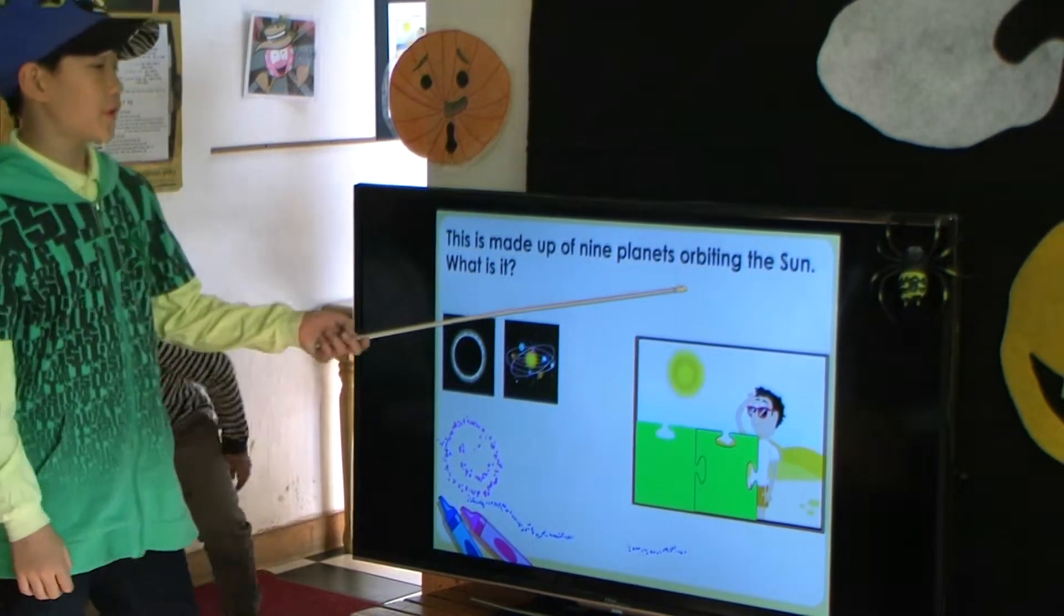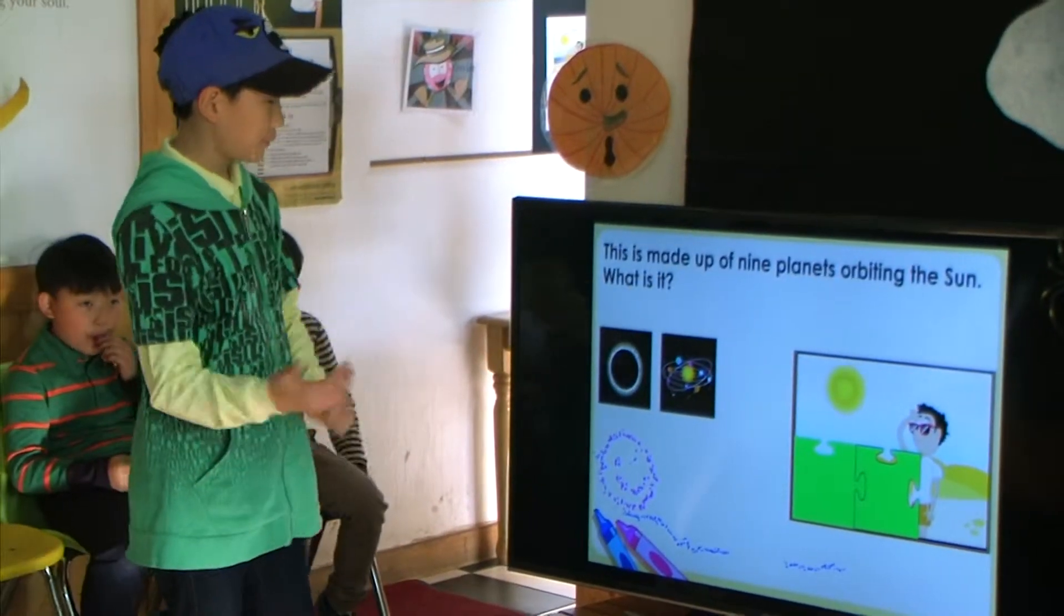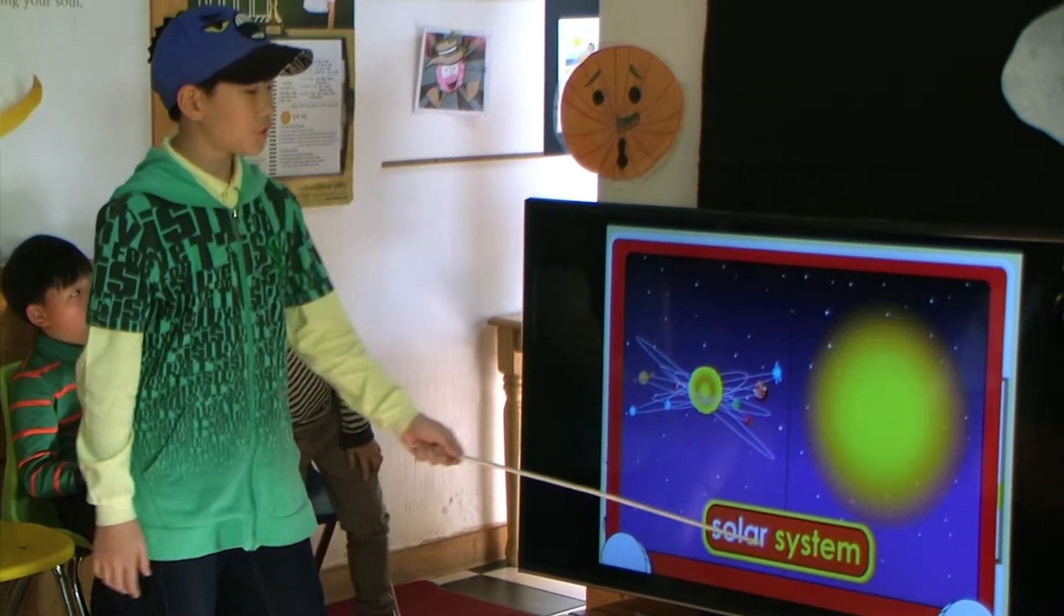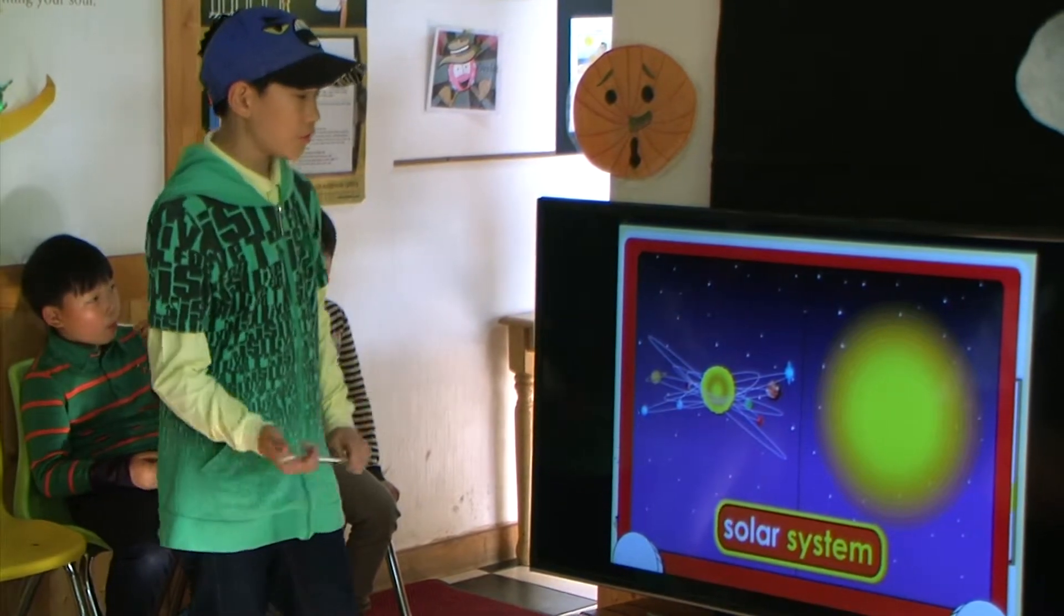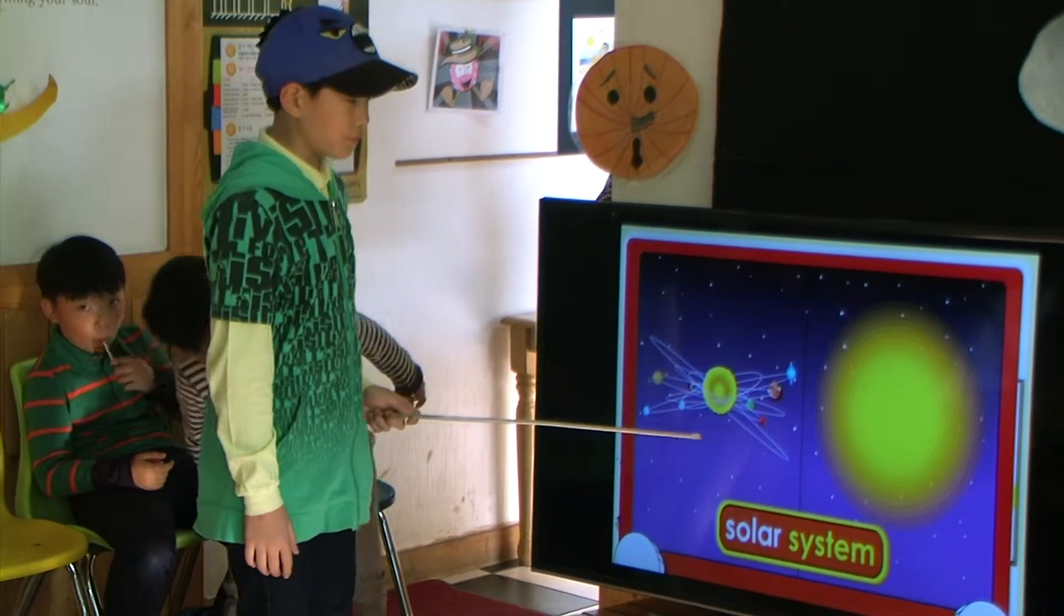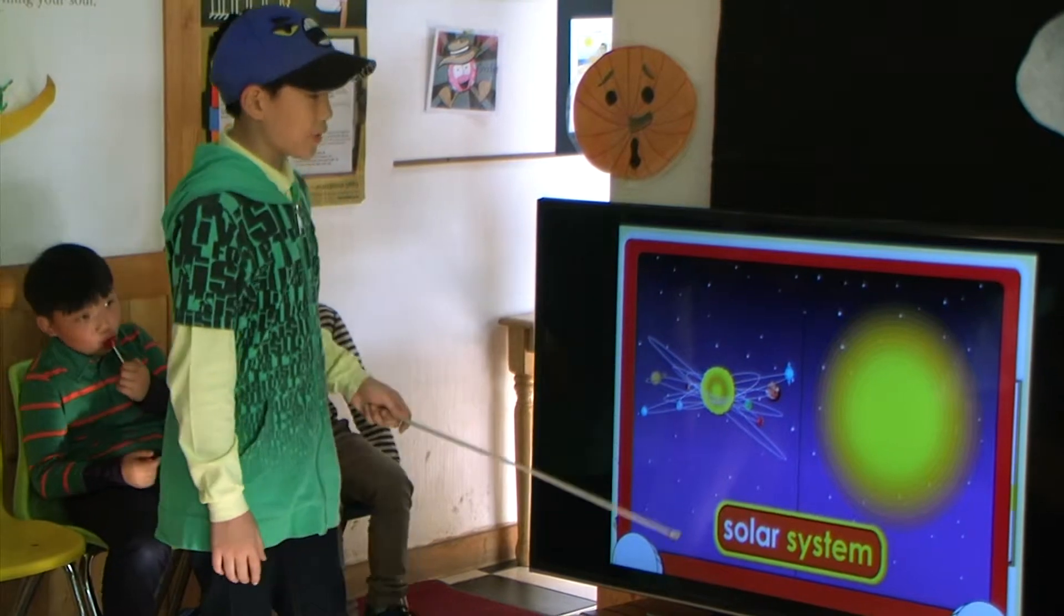What is it? Solar system. Our solar system is made of a medium-sized star, our sun, and our family of planets. These planets orbit the sun.